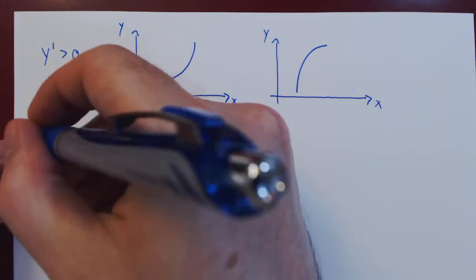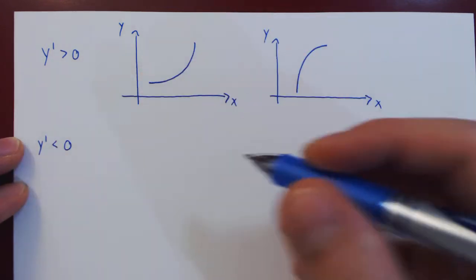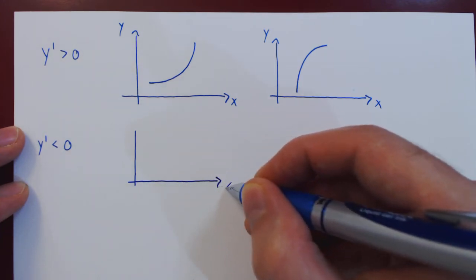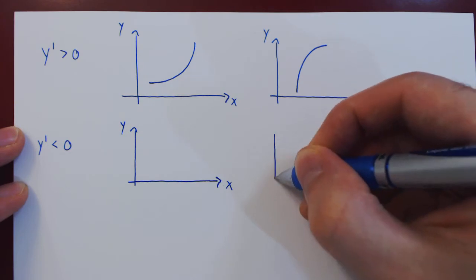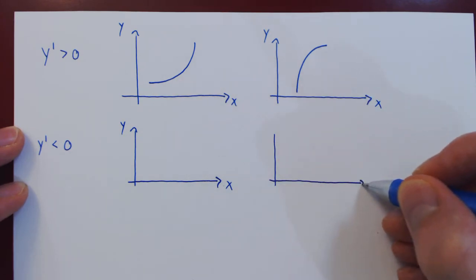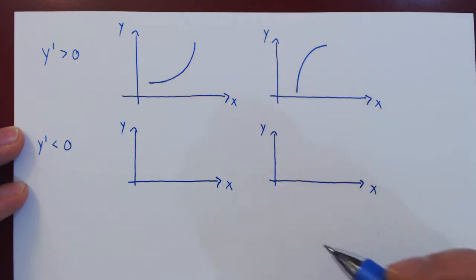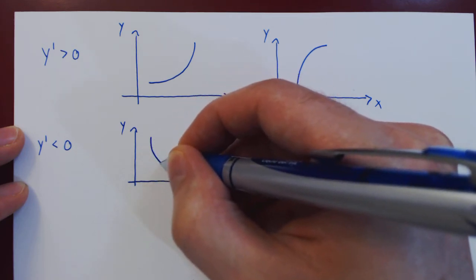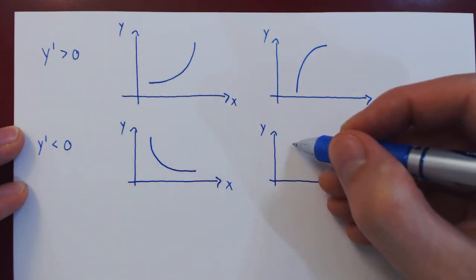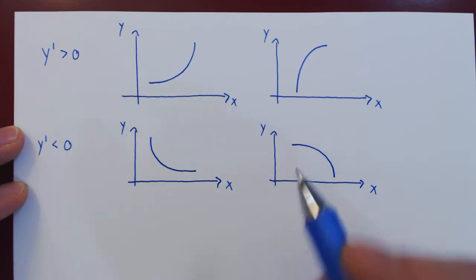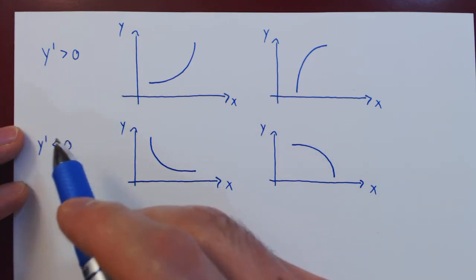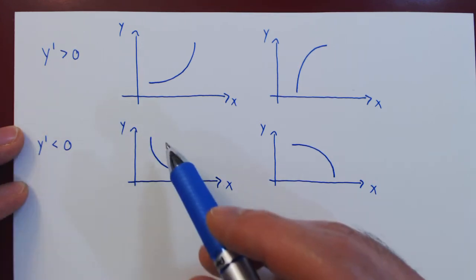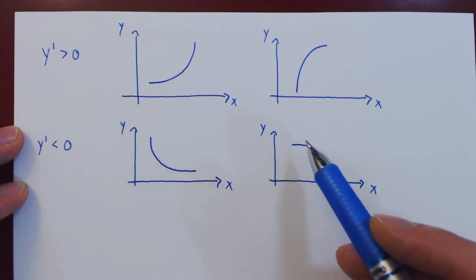The same can be said if the first derivative is negative. We have the same two possibilities. We know that if the derivative of the function is negative, then the function is decreasing, but again the graph could be decreasing concave up, or it could be decreasing concave down. So the first derivative cannot differentiate between decreasing concave up and decreasing concave down.